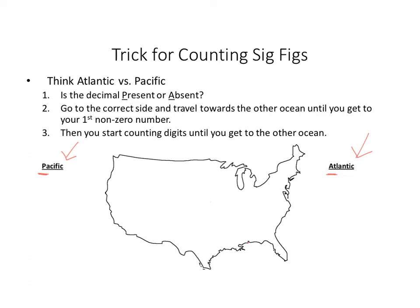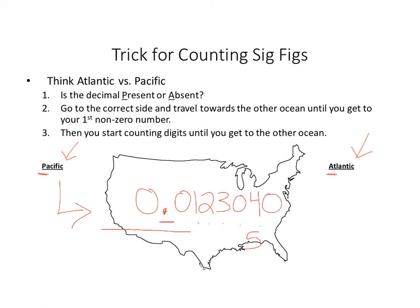If I had a number like 0.012304, I see that there is a decimal present, so I start on the Pacific side. I go to the first number that's not a zero — there it is, the 1 — and count: 1, 2, 3, 4, 5. That's five sig figs in that number. Now if I just add a zero on the end, that automatically changes it from five to six sig figs. So it's all about the decimal — the decimal can really alter how many sig figs you have.